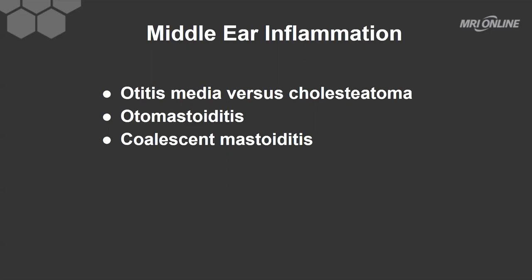sometimes even intravenous antibiotics. Unfortunately, when you have mastoiditis, you may have some of the complications of mastoiditis, which include thrombophlebitis of the sigmoid sinus or transverse sinus, or adjacent inflammation of the meninges with the patient presenting with meningitis.